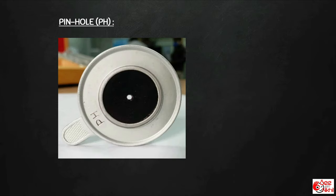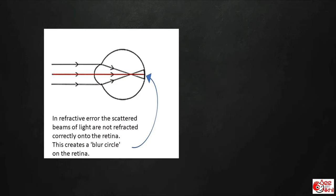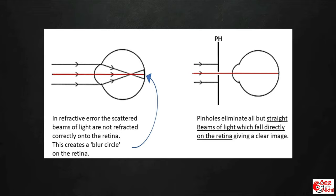The next lens is a pinhole, which is a black disc with a central hole of around 1 mm diameter attached to a handle. In a patient with refractive error, light rays are not focused over a point on the retina — rather, a blur circle is formed. What the pinhole does is eliminate all other rays except the central one, which passes through the nodal point of the eye, giving a clearer image by abolishing the effect of refractive error to some extent.